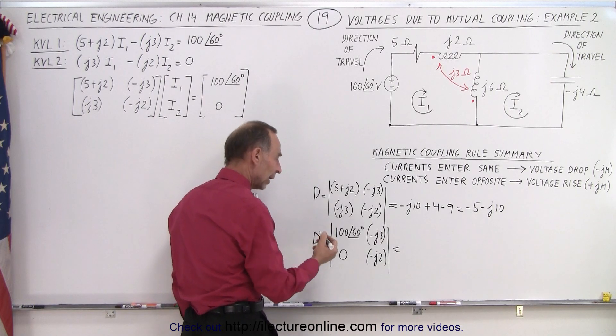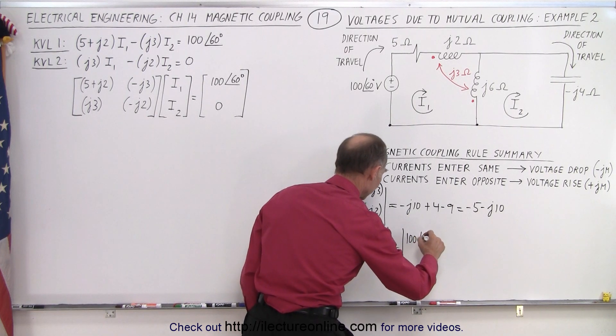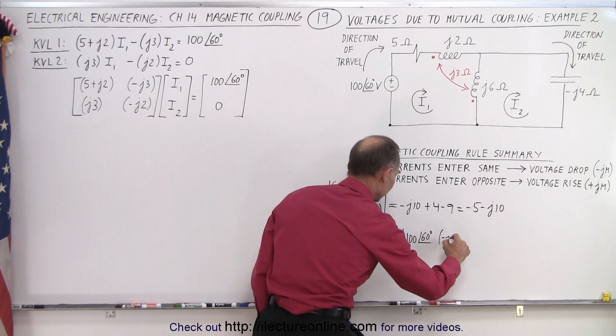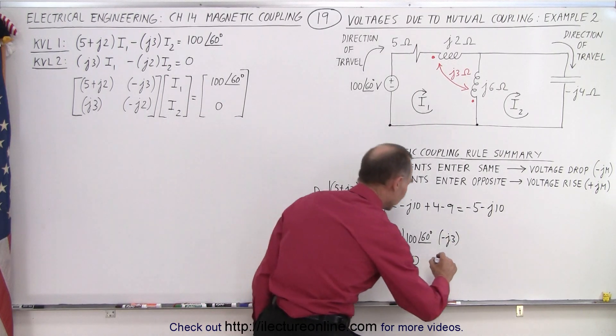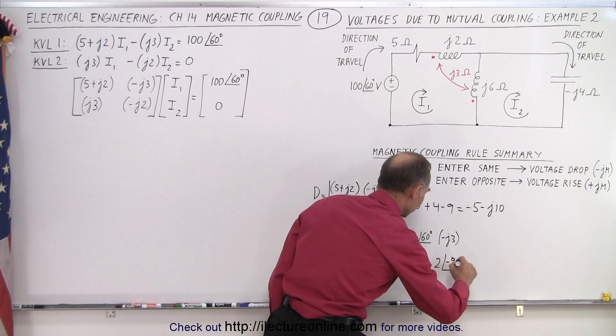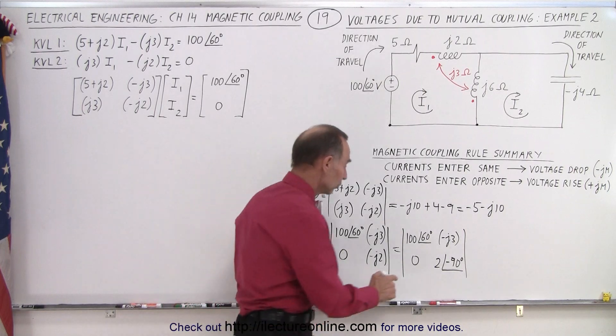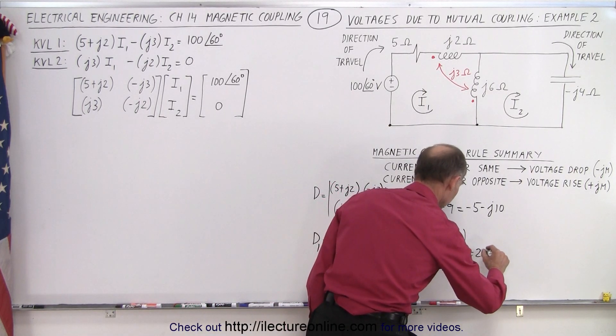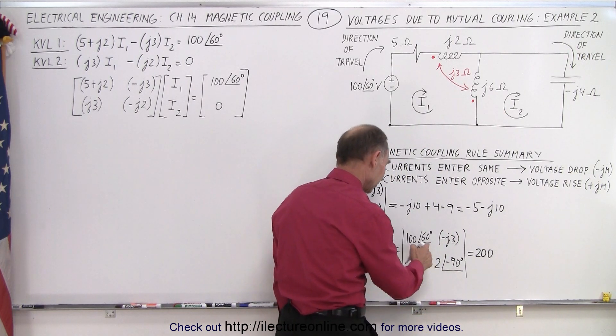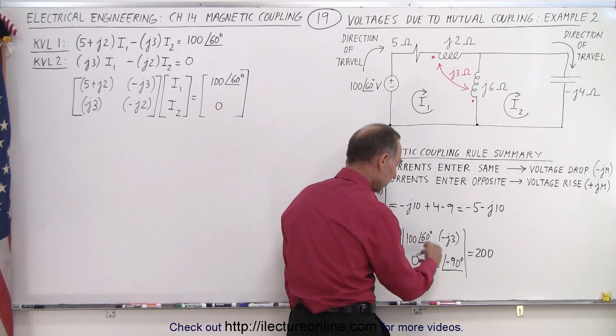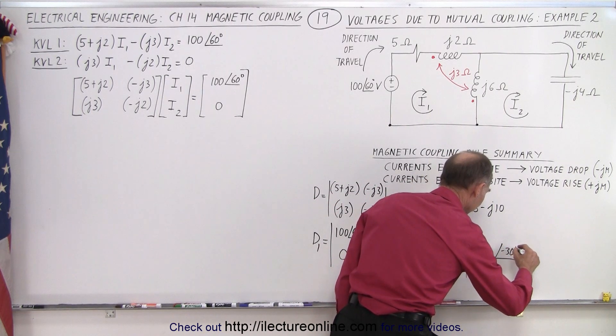So what I'm going to do is I'm going to rewrite it like this. So this becomes 100 with a phase angle of 60 degrees, this is still a minus J3, this is a 0. Instead of writing a minus J2, I could write this as a 2 with a phase angle of minus 90 degrees. And then it becomes easier to multiply those two together. So 2 times 100 gives us 200, and then we have 60 plus minus 90. Since I'm multiplying, that gives me a minus 30 degree phase angle here.